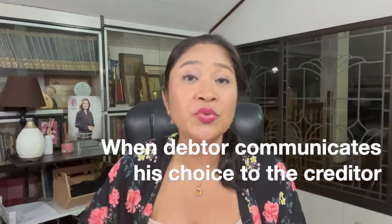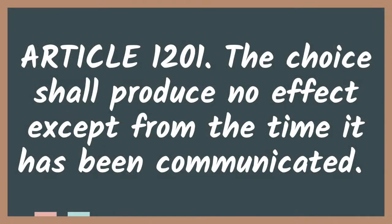When does that choice have any effect? It is only when the debtor has communicated such choice to the creditor. That is Article 1201 of the Civil Code, which says: the choice shall produce no effect except from the time it has been communicated. Is there a particular form of communication? There is no particular form — it could be in writing or done verbally — so long as the debtor has communicated to the creditor what prestation or object he has chosen to deliver to fulfill his obligation.